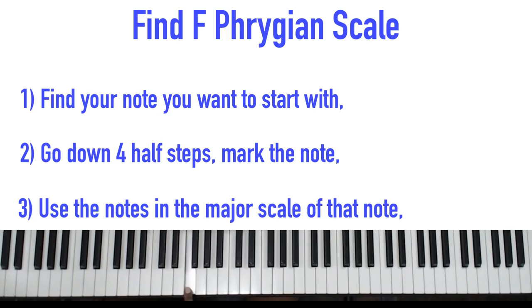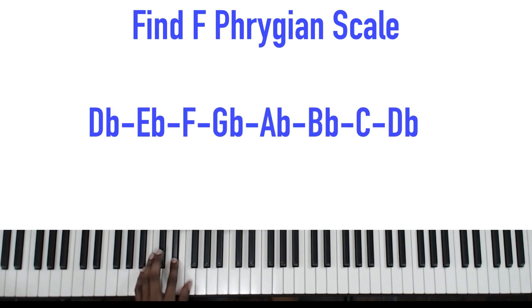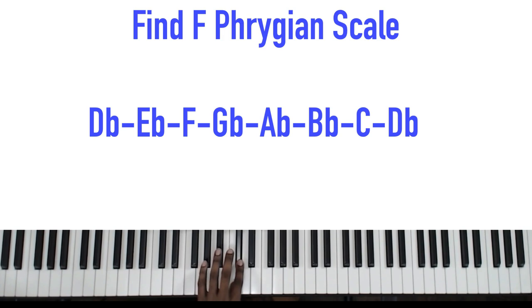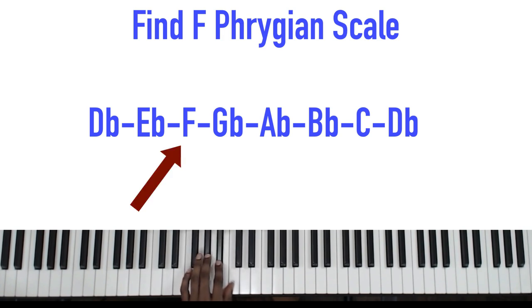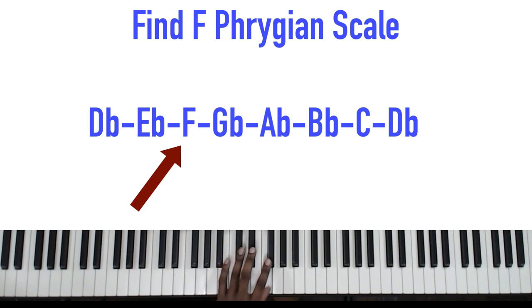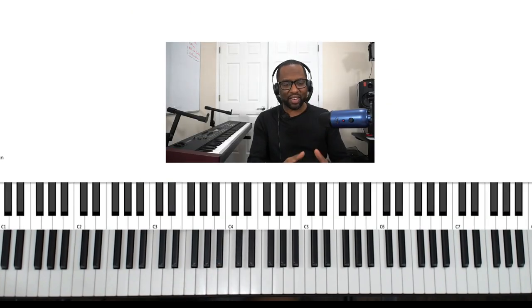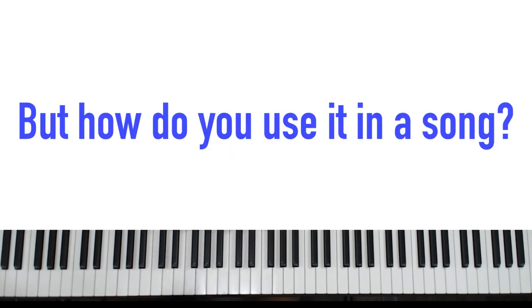If we wanted F Phrygian, we would go to F, go down four half steps — one, two, three, four — and play the notes of a D-flat major scale, starting on the F. And just by doing that, you have a Phrygian sound.